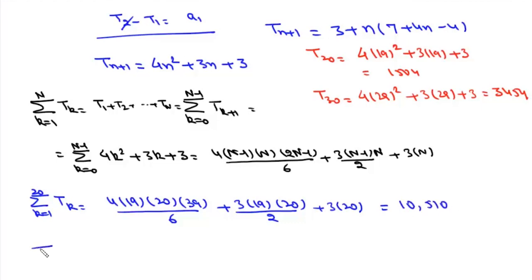And summation from k=1 to 30 of Tₖ: now here we put n = 30, so it will be 4×29×30×59/6 + 3×29×30/2 + 3×30.